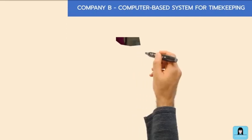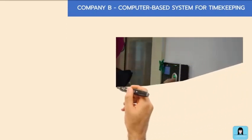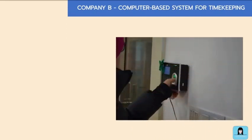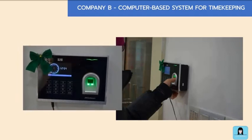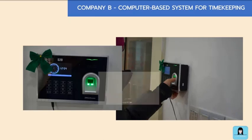Company B uses a computer-based system for their timekeeping process. Employees place their fingers on the biometric device located at the company's gate to record their time-in and time-out. The biometric is an electronic device programmed and linked to an application that records employee time-in and time-out.